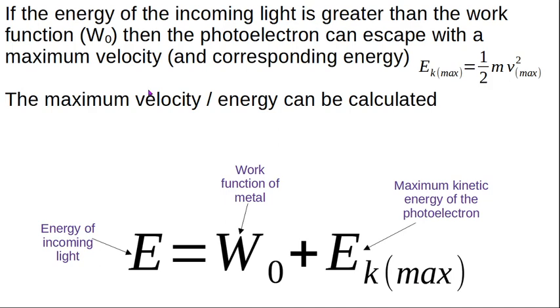Something else interesting happens. If you shine light with an incoming energy which we call E, if the energy of the incoming light is greater than the work function, which is the minimum amount of energy to emit the electron, then the photoelectron can escape with a maximum velocity. But we know that velocity is corresponding to kinetic energy. So Ek max equals a half mv squared. But what are we talking about here? We are talking about electrons. So this energy that the photoelectron comes out with is a half times the mass of electron times the velocity that it escapes with.